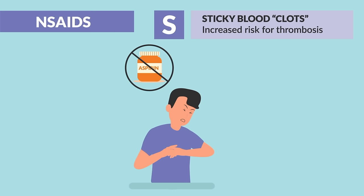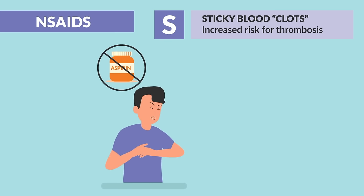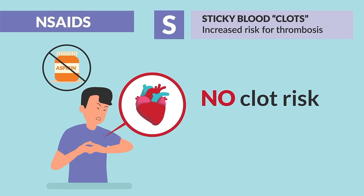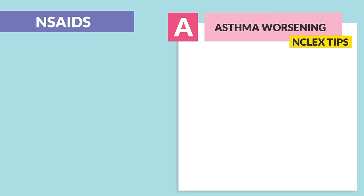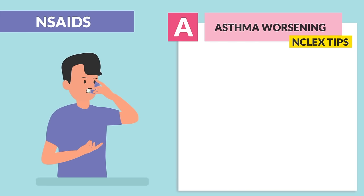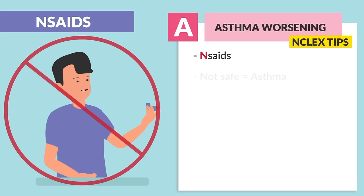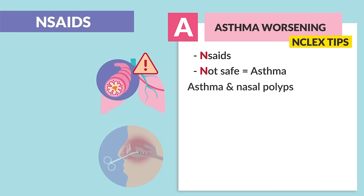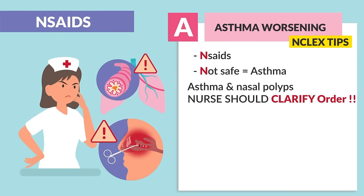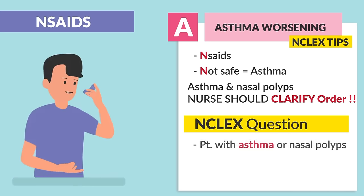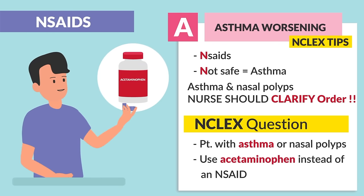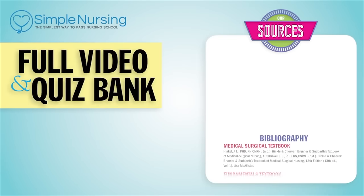Aspirin is the weird one here — it's kind of the hybrid of the group and is used to thin the blood for cardiac patients, but we cover that in detail in its own lecture. A is for asthma — big NCLEX tip — leading to bronchospasms. NSAIDs are not safe for asthma. Key terms are asthma and nasal polyps; the nurse should clarify the order. The common question involves a patient with asthma or nasal polyps, and the answer is usually to use acetaminophen instead of an NSAID.